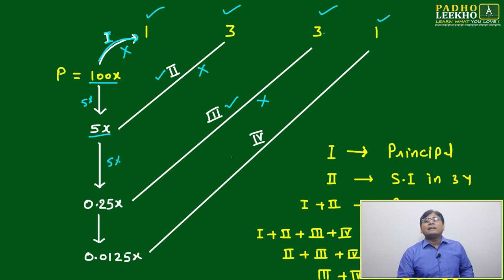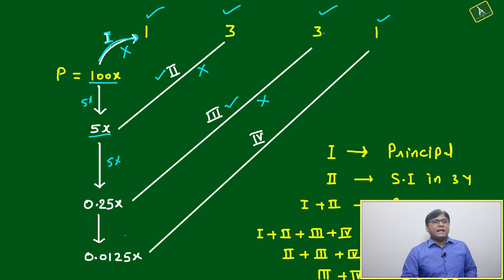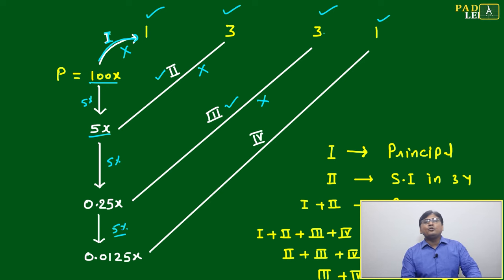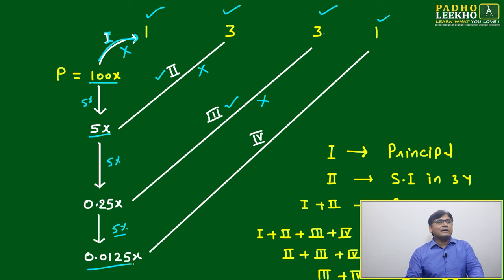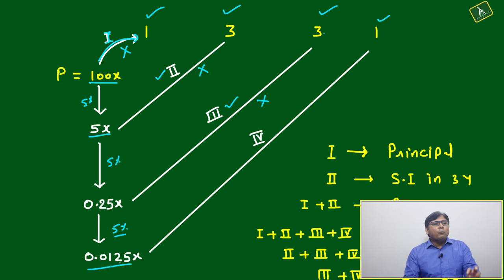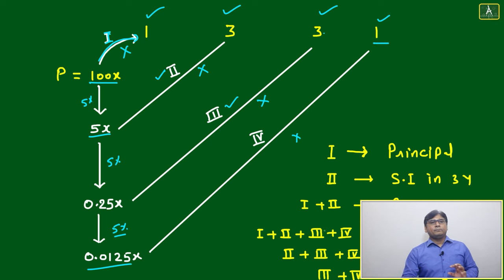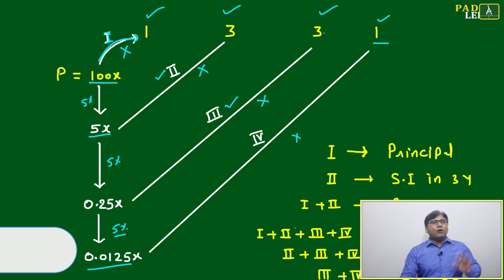Then you get Line 3. Again you take 5% — you have been taking 5% repeatedly: 5, 5, 5 — the value has become 0.0125x. It becomes very small. Multiply it by 1, and that is your Line 4.